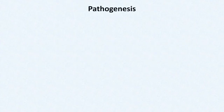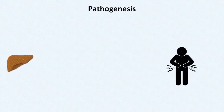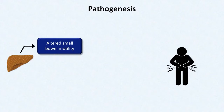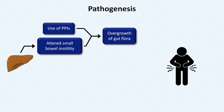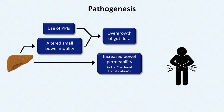So how does SBP develop in the body? The cirrhotic liver causes a lot of pathophysiologic changes. One of those is altered motility of the small bowel. With a contribution from the near-ubiquitous use of proton pump inhibitors in cirrhotics, there is an overgrowth of gut flora. In addition, cirrhosis also leads to an increase in bowel permeability, a process called bacterial translocation.